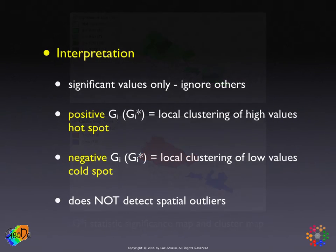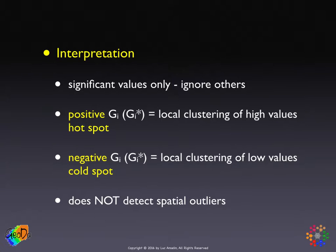How do we interpret this statistic? Just like for the local Moran, we only deal with significant values. Areas that are in gray we don't care about — even though they have statistics, they're not significant, so we don't care about their sign or magnitude. I can't emphasize this enough because there is software that maps all the local Moran or all the GI statistics, which is very misleading. Only the ones that are significant should be considered. A positive GI or GI star statistic points to local clustering of high values — a hot spot. A negative GI or GI star statistic indicates a local cluster of low values — a cold spot.